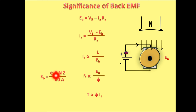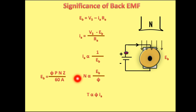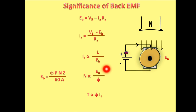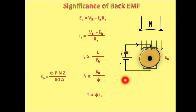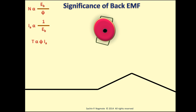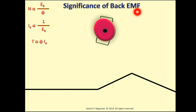The EMF equation is given by: Eb = (φ·P·N·Z) / (60·A). From this we can derive that speed N is proportional to Eb / φ. This means the speed of the motor is directly proportional to back EMF. Finally, the torque equation of a DC motor shows torque T is directly proportional to φ × Ia. From these three equations — N ∝ Eb/φ, Ia ∝ 1/Eb, and T ∝ φ·Ia — we can now discuss the significance of back EMF.